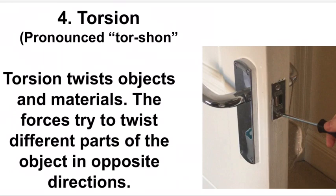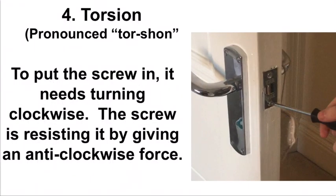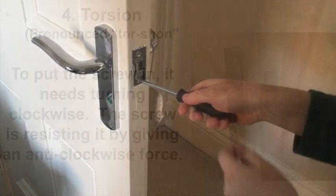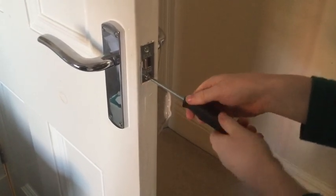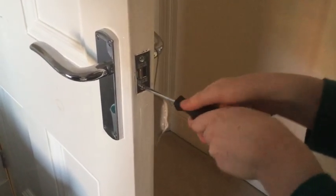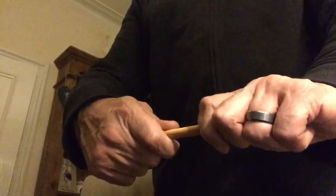Force number four is torsion — this is the name for a twisting force. The person holding the screwdriver is applying a clockwise force, but the screw itself is providing an anti-clockwise force. This means the screwdriver blade is being twisted in opposite directions, so it has to be good in torsion. Keys also need to withstand twisting and torsion forces so they can turn inside the lock. Here's a breadstick — rubbish in torsion, because when you twist it, it just breaks. It tastes nice though.